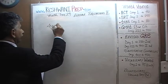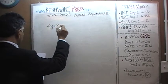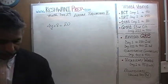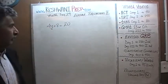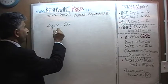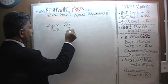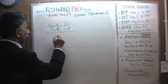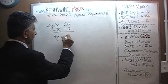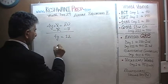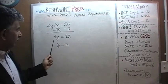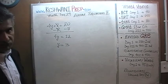4y plus 8 equals 20. Let's subtract 8 from both sides. 8 drops out and 4y equals 20 minus 8 which is 12. And y will be equal to 3 if we divide both sides by 4.